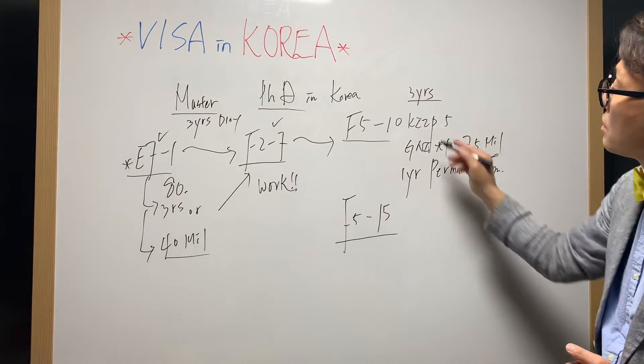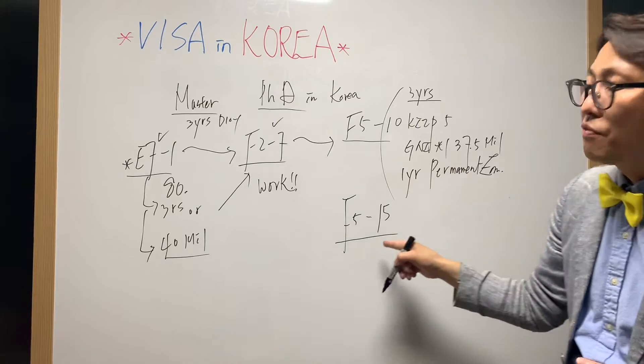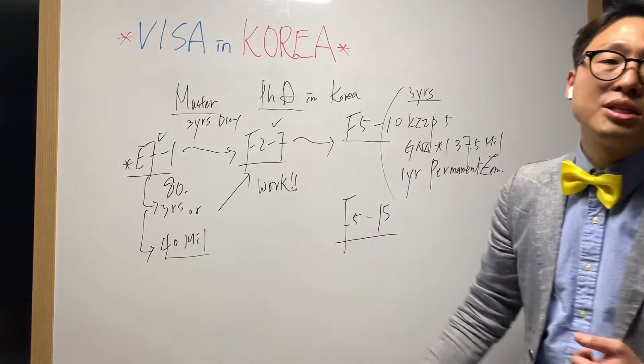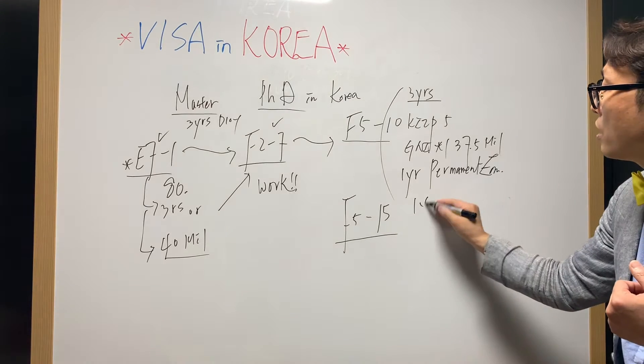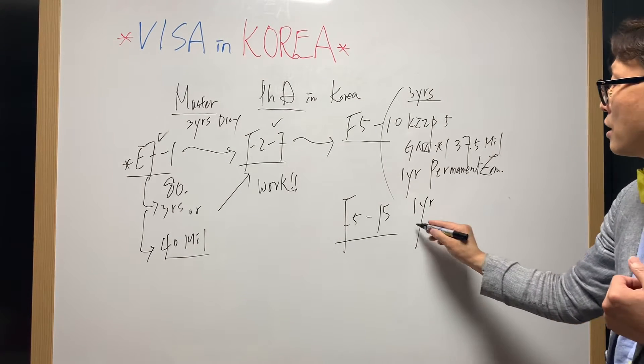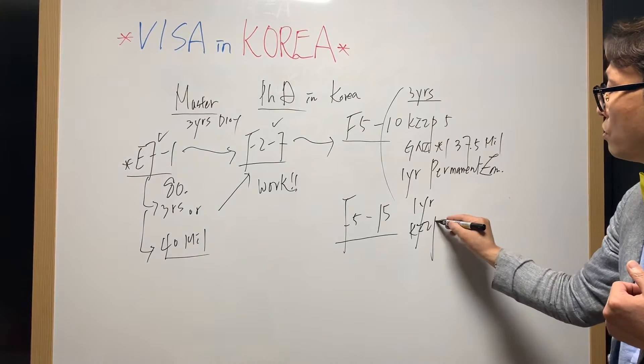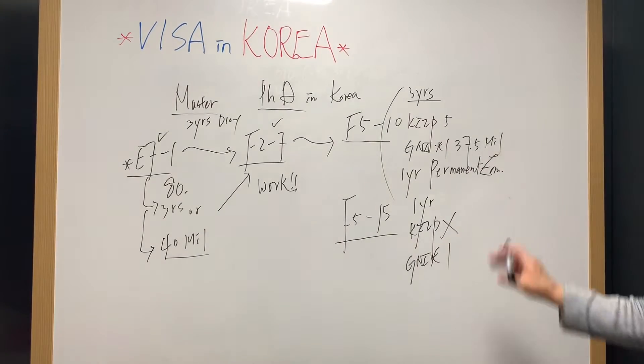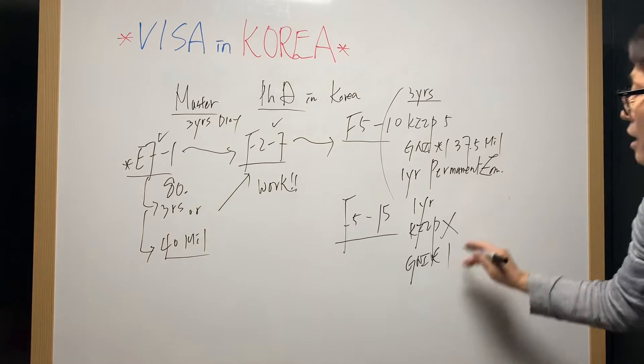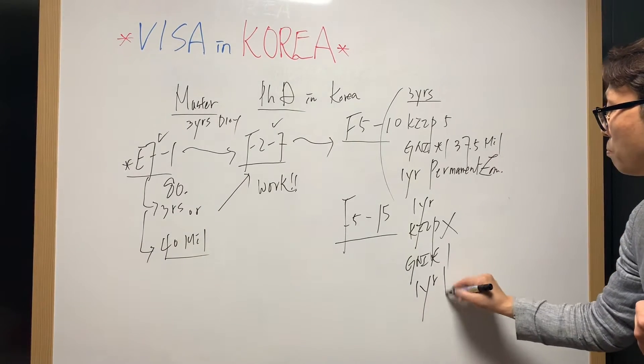How about the F5-15 PhD degree holder? One year from your graduation in Korea, KIIP no need, and GNI one-time income the same as F5-10, 37.5 million won, and one year permanent employment.